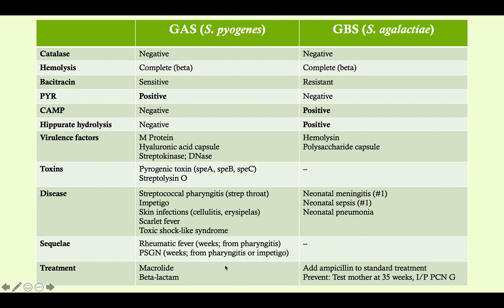Treatment for group A strep is either a macrolide or a beta-lactam. For group B strep, we use ampicillin added to standard treatment — neonatal meningitis, pneumonia, and sepsis regimens always include ampicillin because listeria is another cause and ampicillin is effective against it. For prevention, we test the mother at 35 weeks by swabbing the vagina, rectum, and perineum. If she is group B strep positive, we give penicillin G as prophylaxis during labor, which drastically reduces the risk of transmission to the baby.